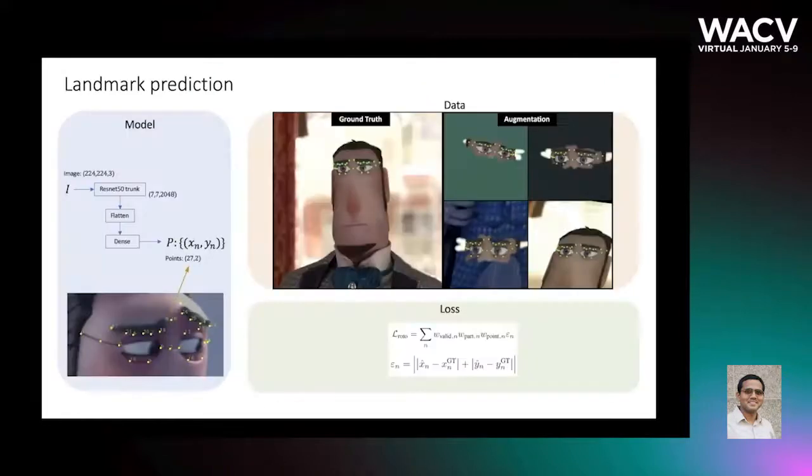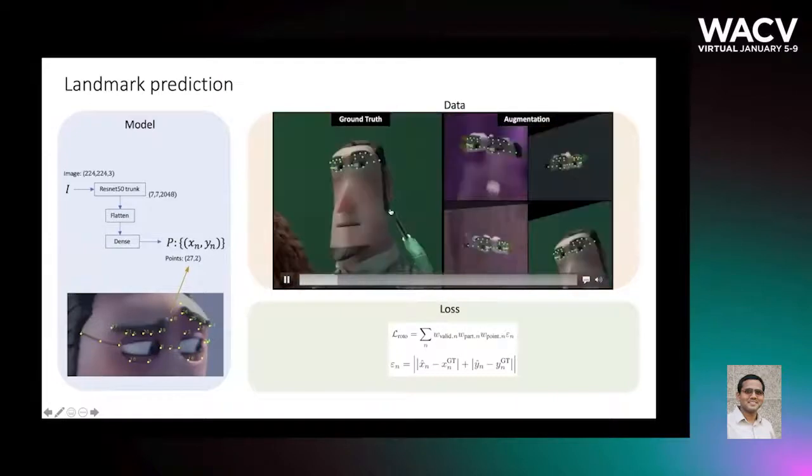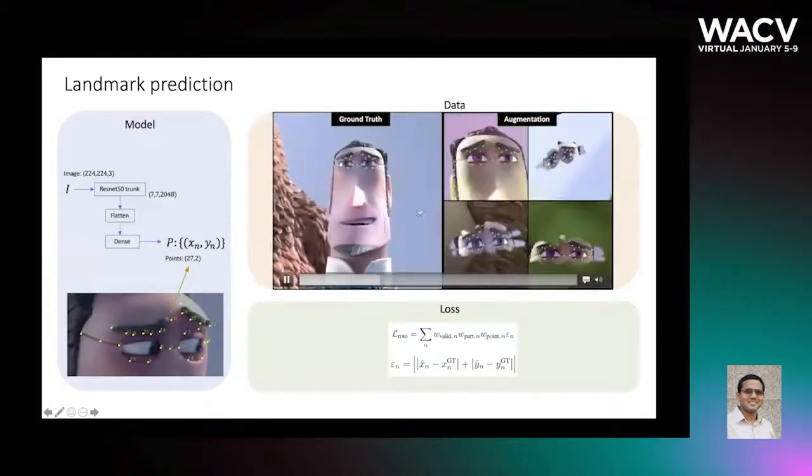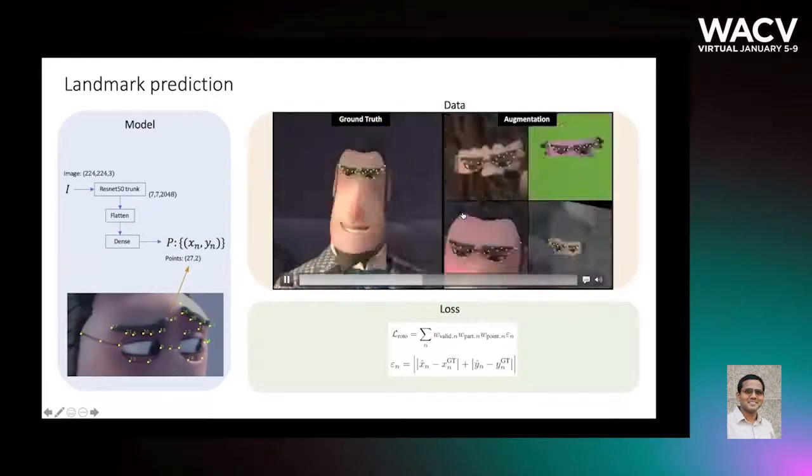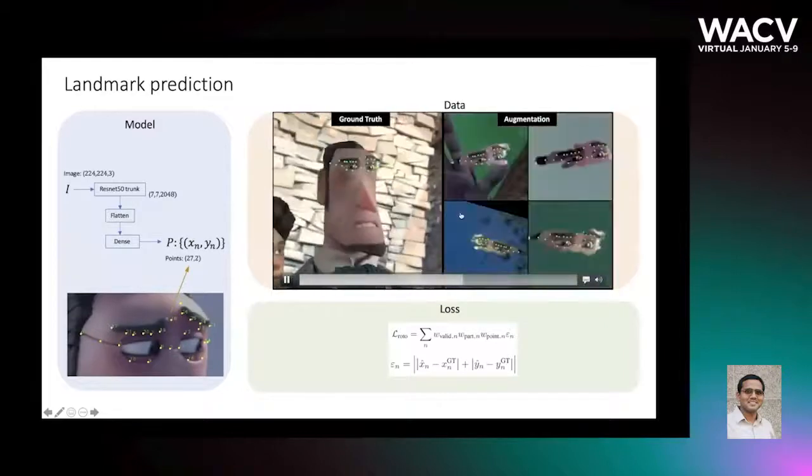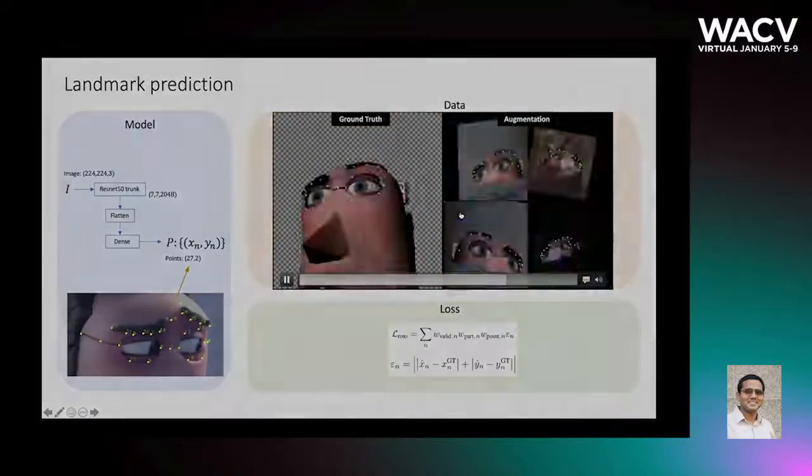Our landmark model is an extension of the ResNet-50 architecture. To increase the effectiveness of our minimal dataset, we augment the ground truth images by randomizing brightness, blurring, warping, flipping, and adding backgrounds and occlusions.